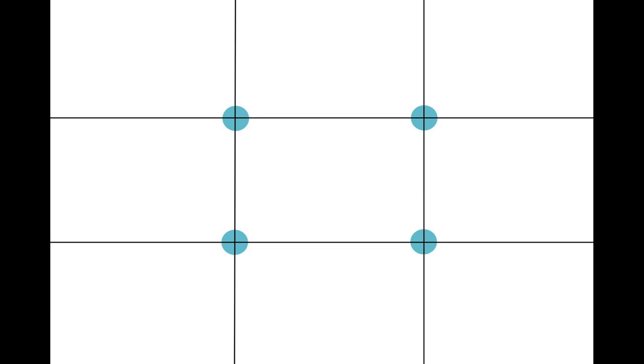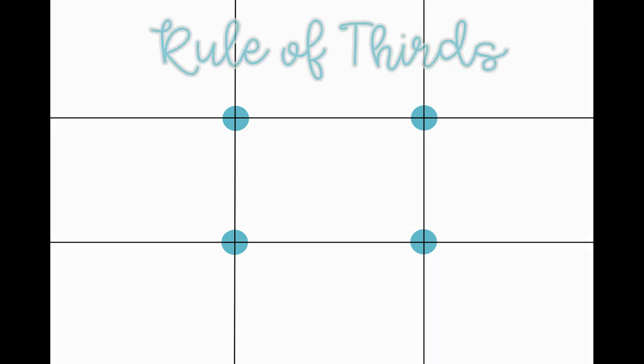When looking through your camera, I want you to imagine a tic-tac-toe grid. This grid divides your picture into thirds. Both the horizontal and vertical sections are split into three sections.